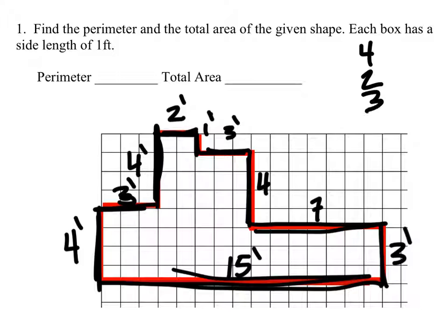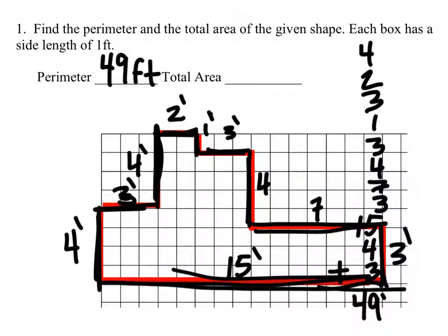three, one, three, four, seven, three. Should have given myself more space. Fifteen, four, and three. Yep, I think I got them all. And we're just going to add all these together. So, we'll say this is forty-nine feet.